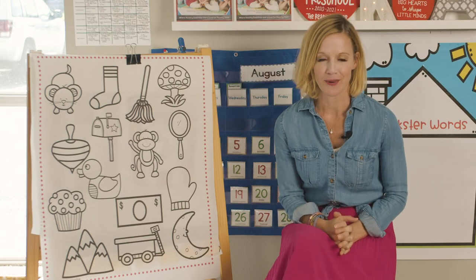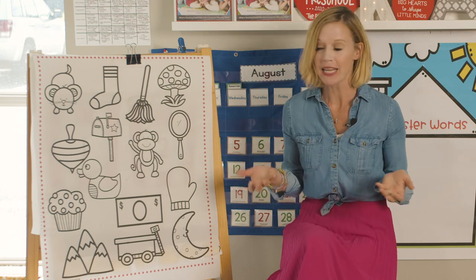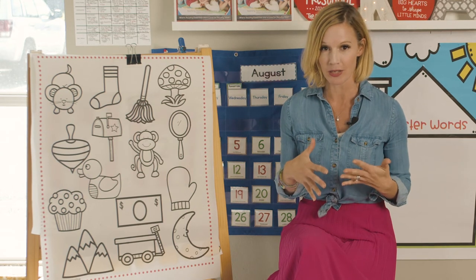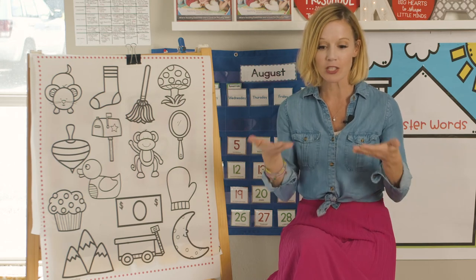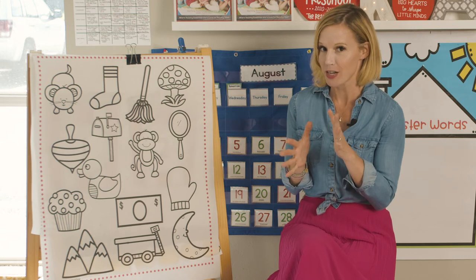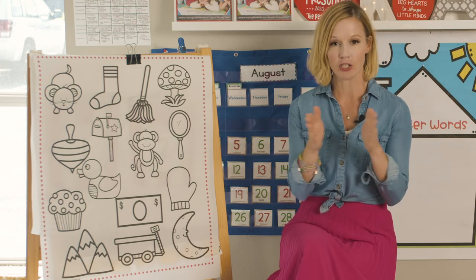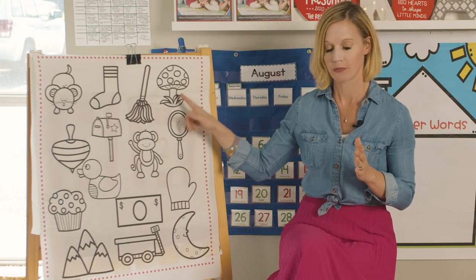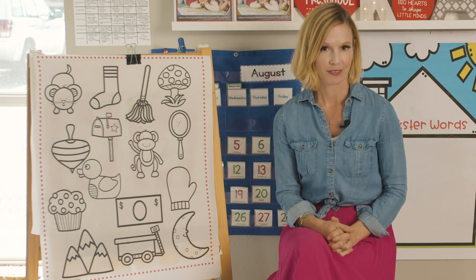Hi boys and girls, this is Karen from The Reading Corner. Today we're going to do a fun activity and we're going to do a couple different things with it — to show you that even if the directions say to do it one way, you've got so many different ways you can do it. We've got a lot of objects on this page. I'm going to say a word in two chunks and I want you to try to find the word I'm talking about. The word I'm thinking of is mush room — mushroom.